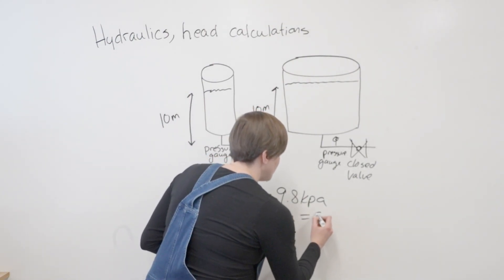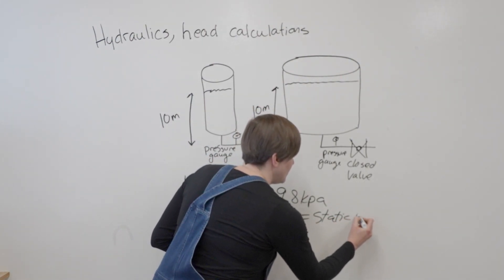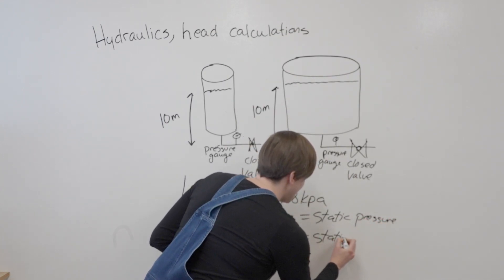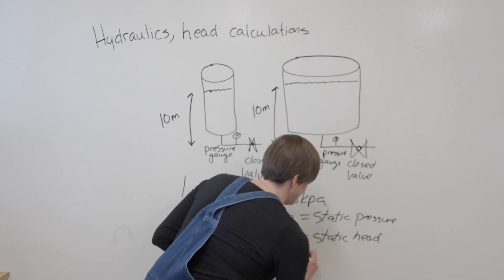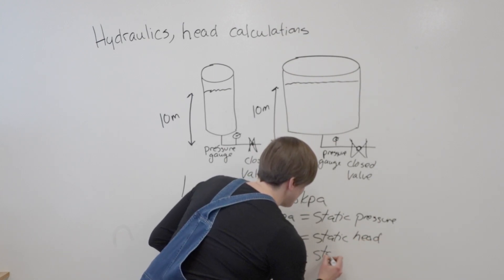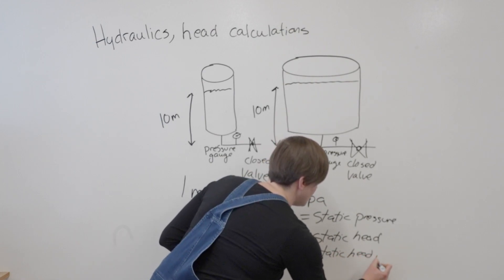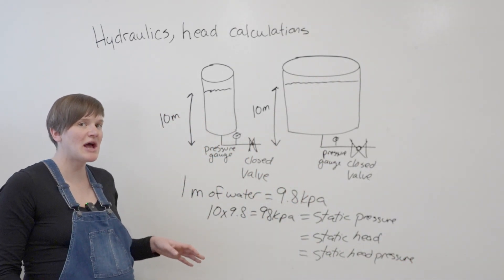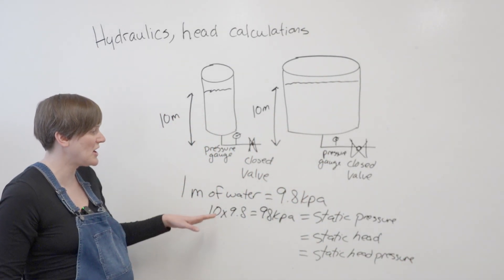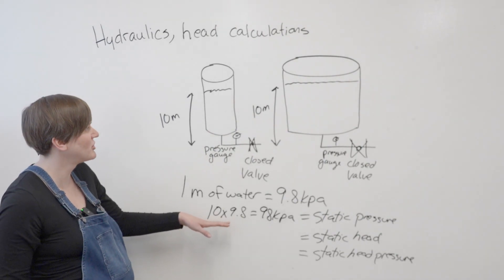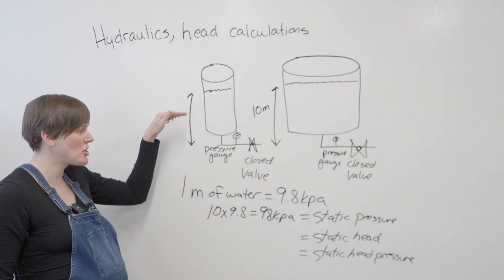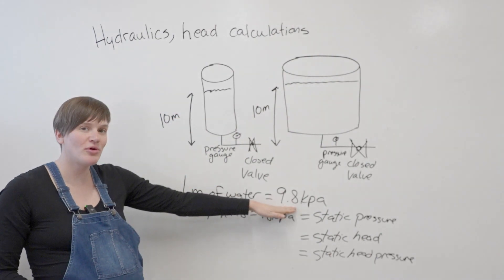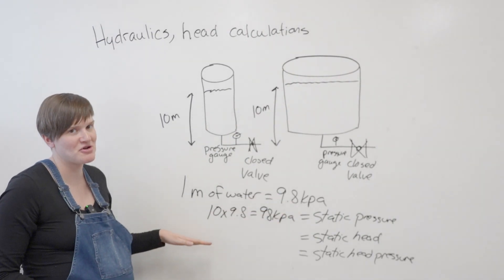That is our static pressure, might be referred to as static head or static head pressure. So if you have a question that's asking you to calculate static head, static head pressure, it's giving you a height of water. You multiply the height of water in meters by 9.8 kPa, which is on your formula sheet, to get your answer.